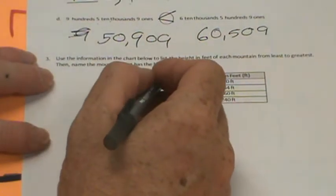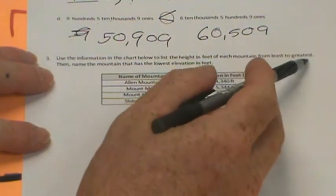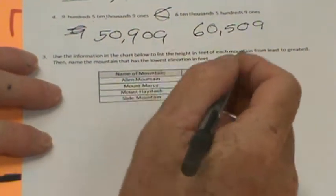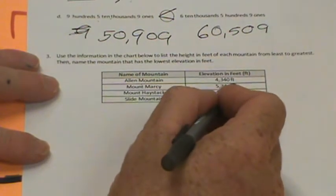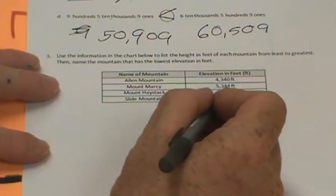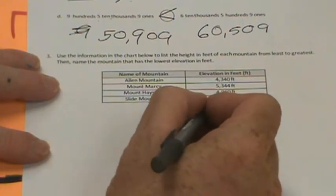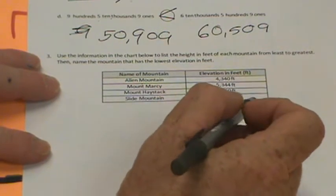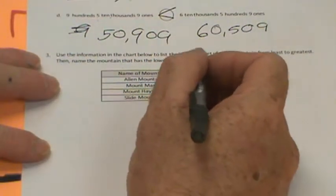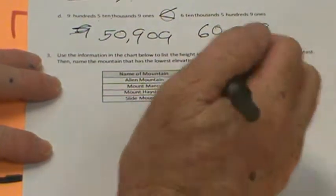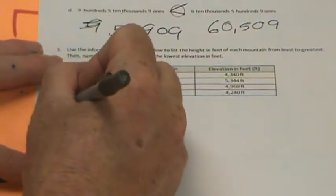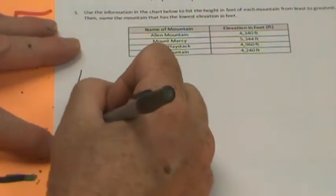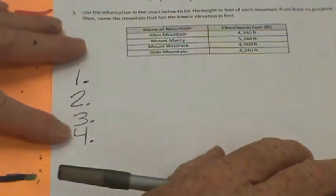It says use the information in the chart below to list the height in feet of each mountain from least to greatest, then name the mountain that has the lowest elevation in feet. So we have Allen Mountain is 4,340 feet. Mount Marcy is 5,344 feet. Mount Haystack is 4,960 feet. And Slide Mountain is 4,240 feet. So we are going to list the height in feet of each mountain from least to greatest. So we're going to go 1, 2, 3, and 4.